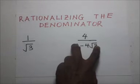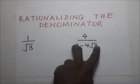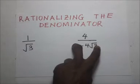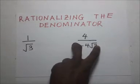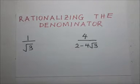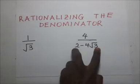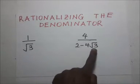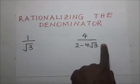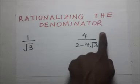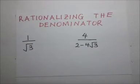Just like we've been exploring in our previous videos, we rationalize the denominator by multiplying it by its conjugate. For example, if you want to rationalize a denominator, we multiply it by its conjugate, and we do the same to the numerator.